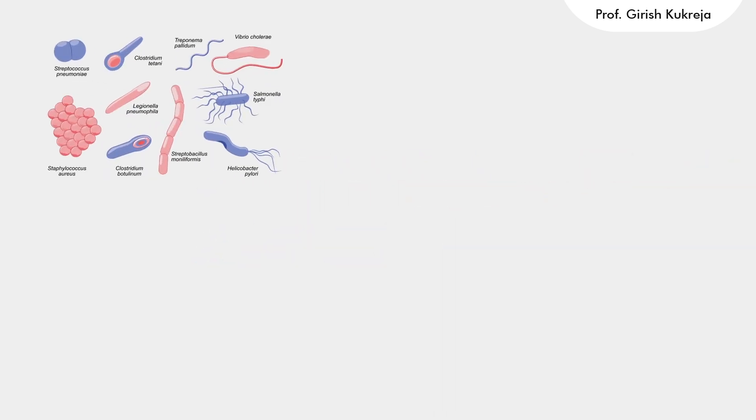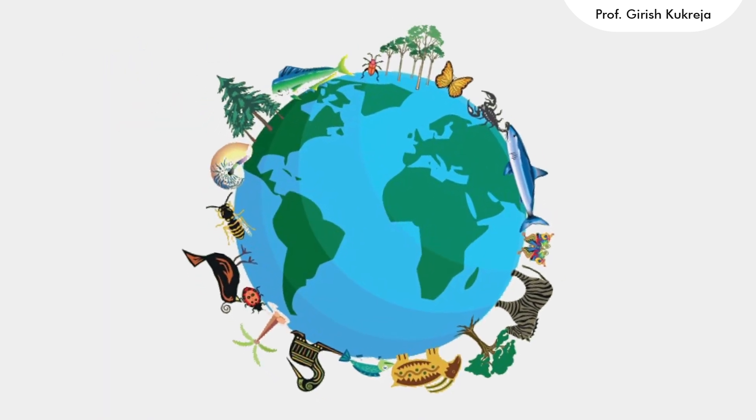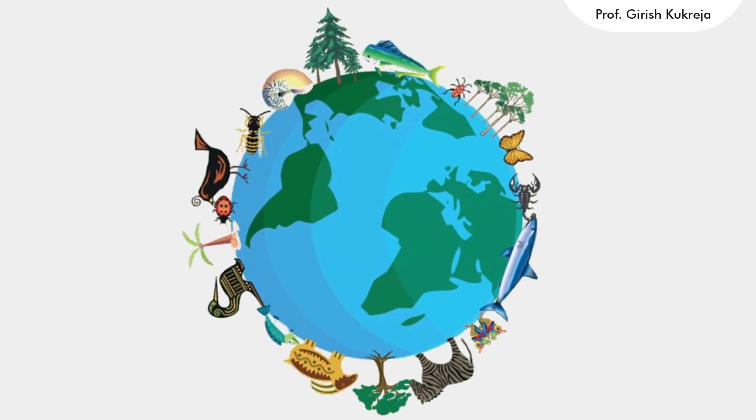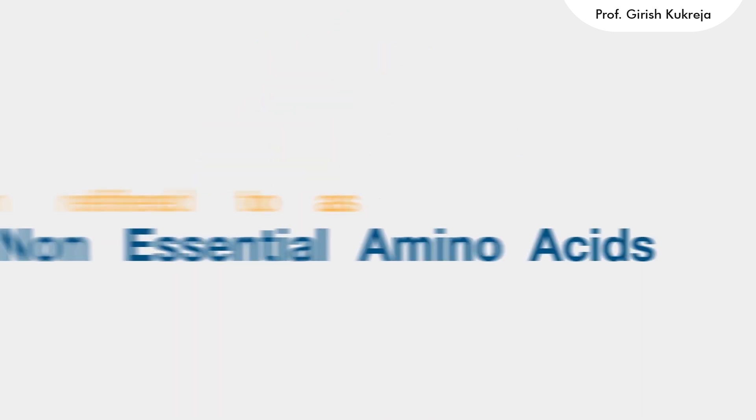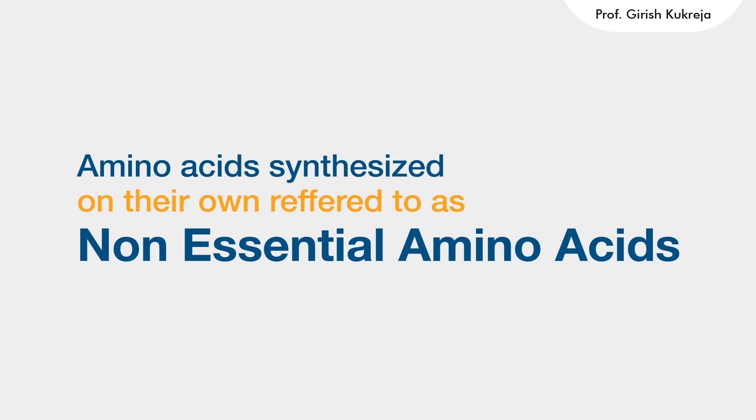Most bacteria and plants can synthesize all the required 20 amino acids, while mammals can synthesize only half of them. They generally prefer to synthesize amino acids which have a simpler pathway for their formation. Such amino acids which they can synthesize on their own are referred to as non-essential amino acids.